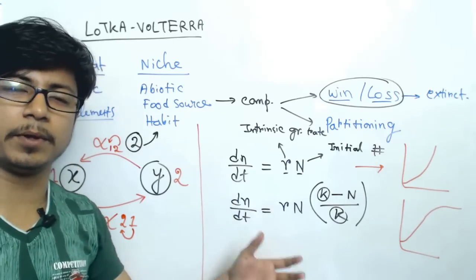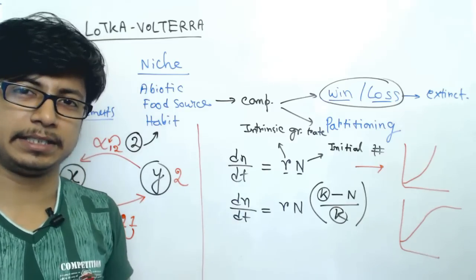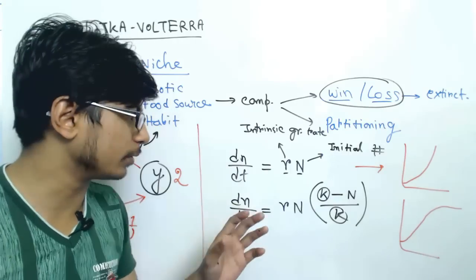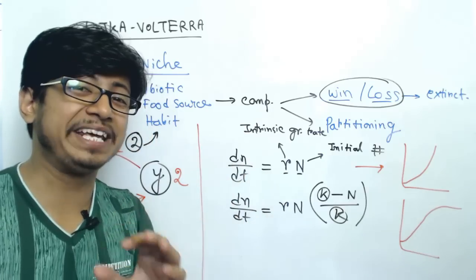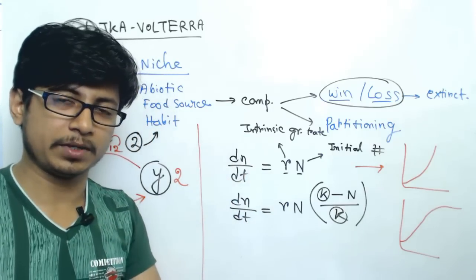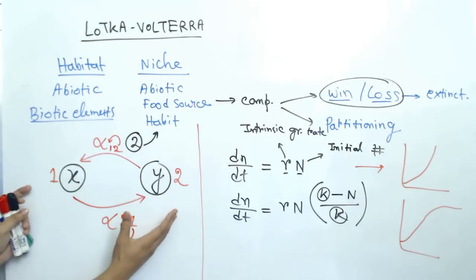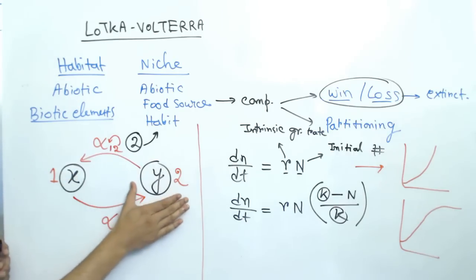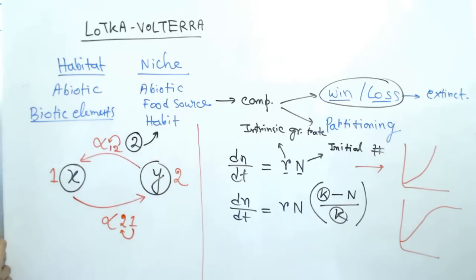It's fine to calculate the population growth of one species up to this point. But if that species is in competition with another species in the environment, then these two formulas are not enough. In that case, we need to use the idea of the Lotka-Volterra model — if we are calculating the growth of one species in competition with another, we need to also account for the population size of the other species and many other factors.